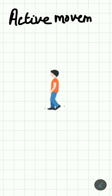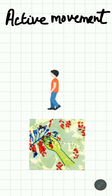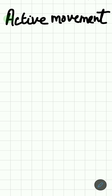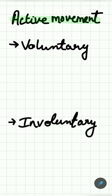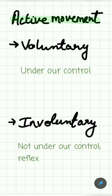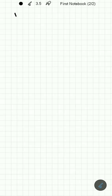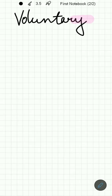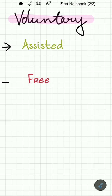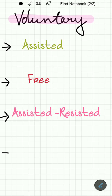Active movement plays a major role in our life, be it walking or picking things up. Active movements are of two types: voluntary and involuntary. Voluntary movements are in our control, while involuntary movements are not — for example, reflex. Voluntary movements are classified into four types of exercises: assisted exercise, free exercise, assisted-resisted exercise, and resisted exercise.